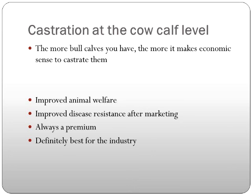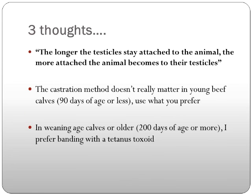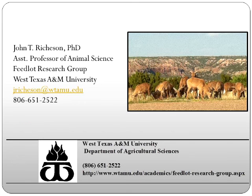To close, I'll go back to the three thoughts: the older they are, the harder it is on them. For younger calves, surgical or band — it really doesn't matter, whatever you prefer. And for older cattle, I prefer banding with a tetanus toxoid. I don't know if we have time for questions, but I'd be glad to answer a couple if we do.